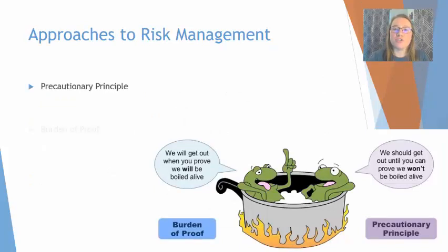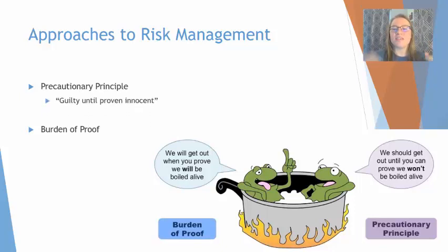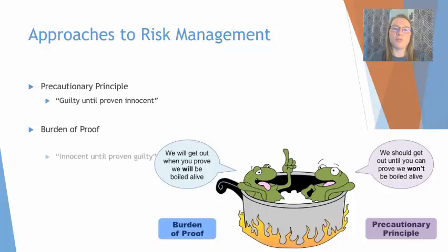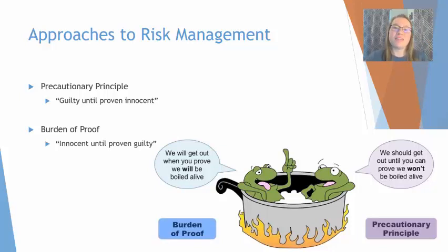There are two approaches to risk management using toxicity information. The precautionary principle is the "guilty until proven innocent" approach — products should not be distributed to the public until we know for sure they won't cause harm to humans or the environment. The burden of proof principle is "innocent until proven guilty" — products are released to the public, and consumers must prove the product is unsafe before it is pulled from the shelf.